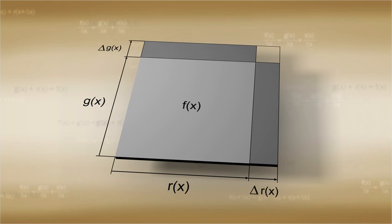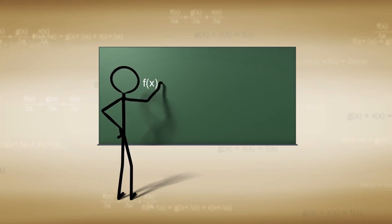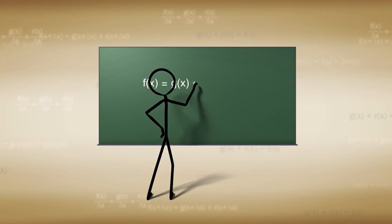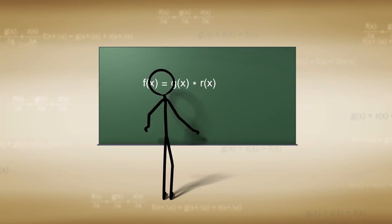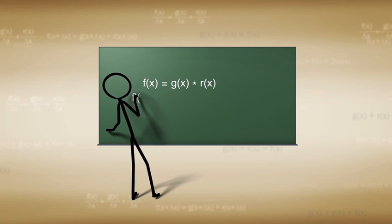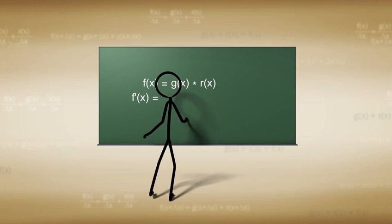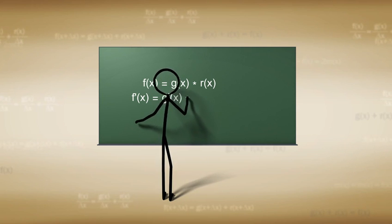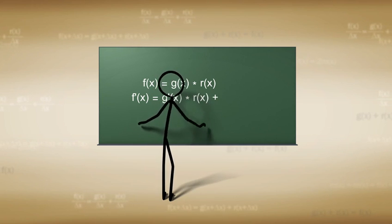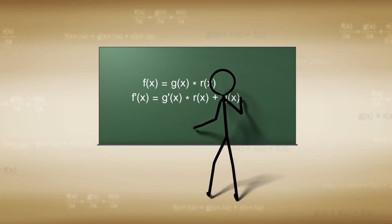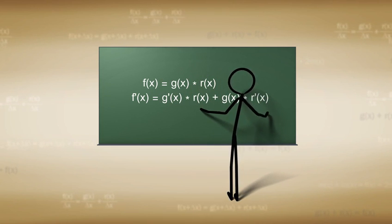Which states that if f(x) is equal to g(x) times r(x), then f'(x) is equal to g'(x) times r(x) plus g(x) times r'(x).